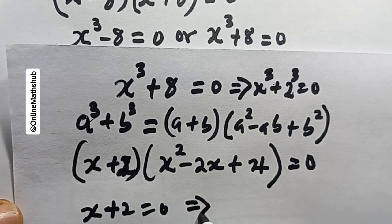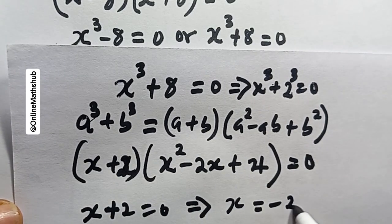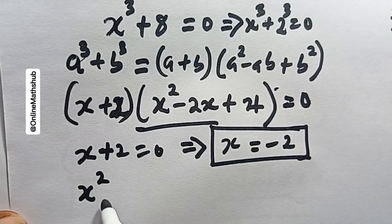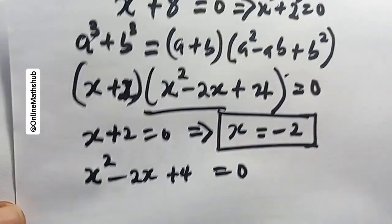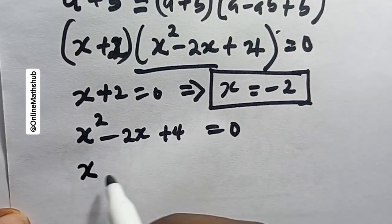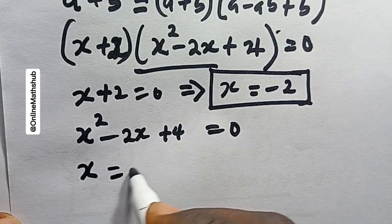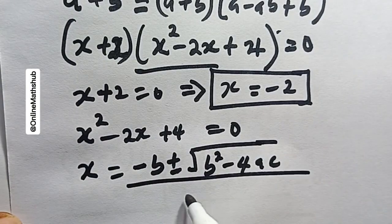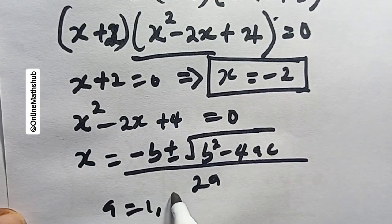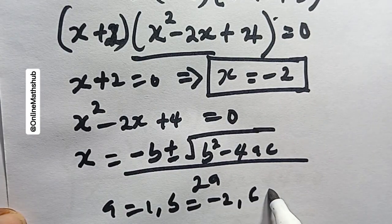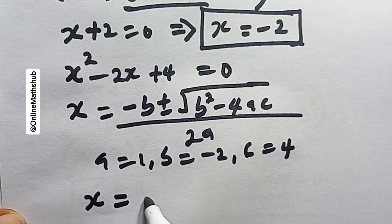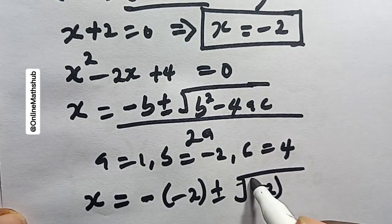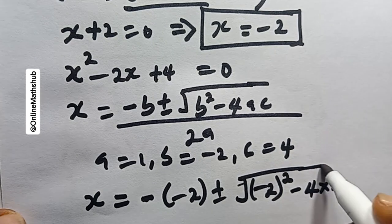Applying the zero product rule, x plus 2 equals 0 gives x equals negative 2. For the other factor, x squared minus 2x plus 4 equals 0, I use the quadratic formula again. Here a equals 1, b equals negative 2, and c equals 4. Substituting: x equals minus of negative 2 plus or minus the square root of negative 2 squared minus 4 times 1 times 4, all divided by 2.